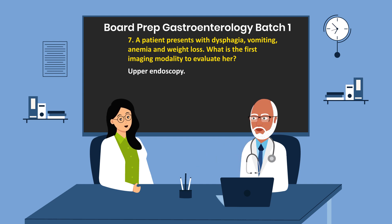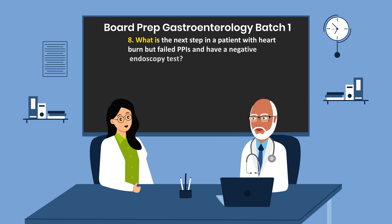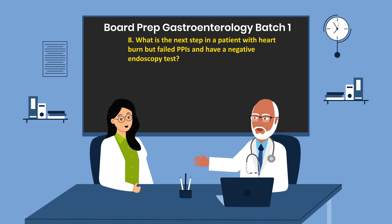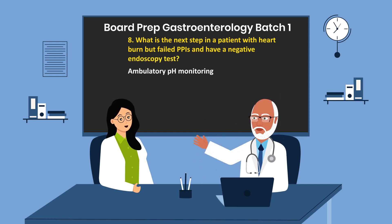What is the next step in a patient with heartburn who has failed PPIs and has a negative endoscopy test? Ambulatory pH monitoring.